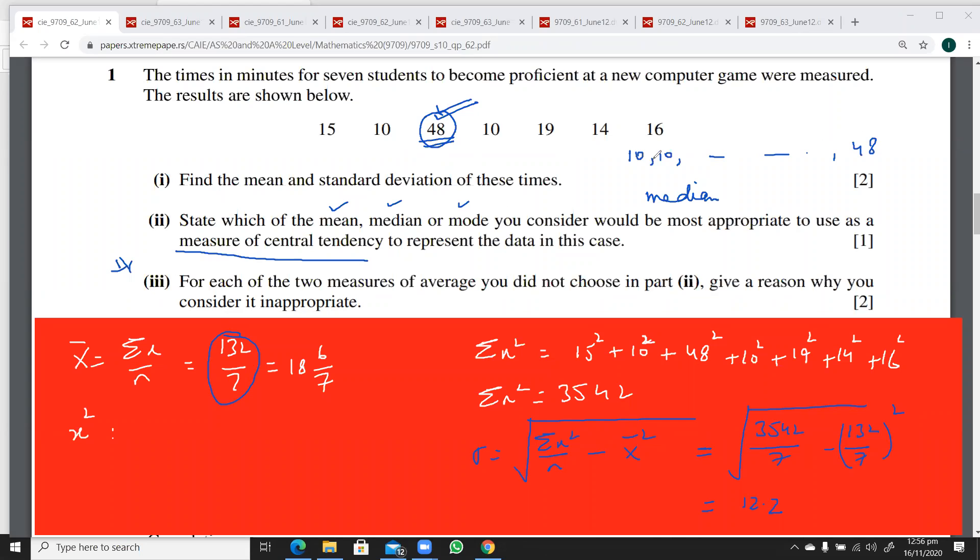Suppose if these were the marks of your class, I can't say the average is 10. There are people getting marks like 19, 16, 14 as well. These are the least marks obtained by students. Therefore, median is going to give a better representation of this data.